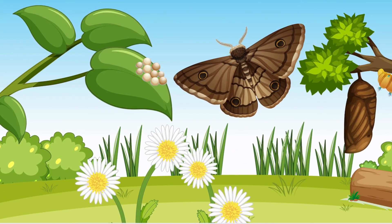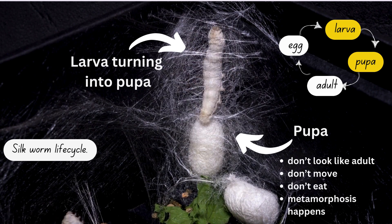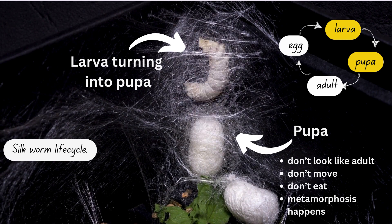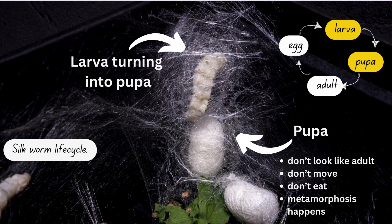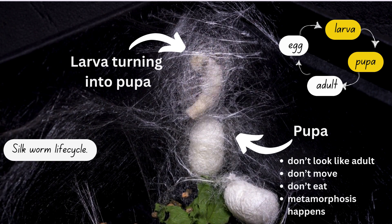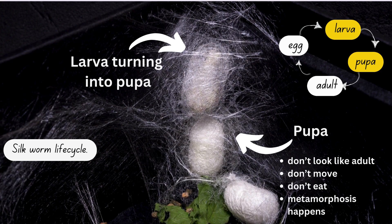The adult butterfly is beneficial for flowering plants. The pupa does not resemble the adult — it's the time when metamorphosis happens and the adult structure develops.